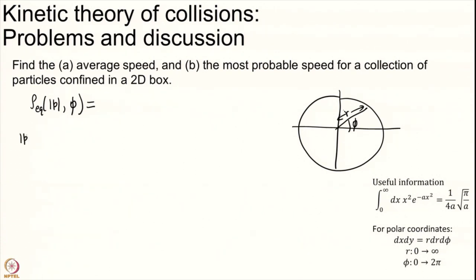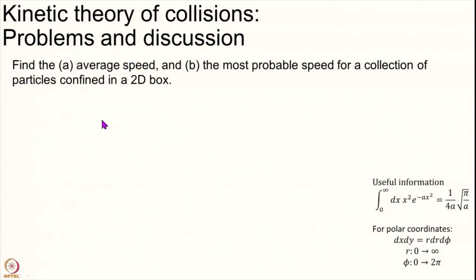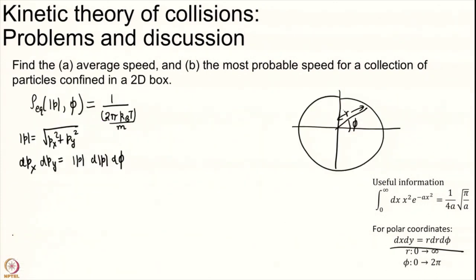We take the ρ from the last slide and convert to p, φ. Our basis: p equals (px²+py²)^(1/2), and importantly dpx dpy equals |p| dp dφ. This equals 1/(2πkT/m) times e^(-β|p|²/2m) |p| dp dφ.